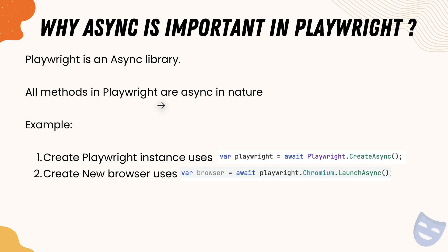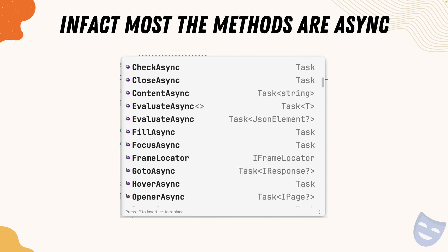So why is async important in Playwright? Playwright is an async library — all its methods are async in nature. For example, creating a Playwright instance uses await Playwright.CreateAsync(). Creating a new browser uses await playwright.Chromium.LaunchAsync(). Most Playwright methods are async: checking checkboxes, closing the browser, ContentAsync, filling text boxes, getting focus, navigating to a page, hovering — all of these are async. Understanding asynchronous programming is a core and important concept when learning Playwright efficiently.